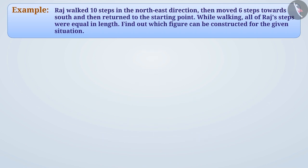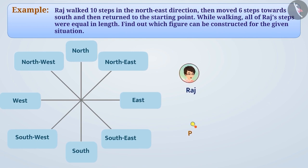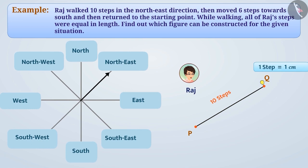So now let's solve our question with the understanding of directions. We will mark the location of Raj with the point P. Raj walked 10 steps towards the northeast direction. Suppose 1 step is equal to 1 cm. We will show this by drawing the line segment PQ in the northeast direction. Then Raj walked 6 steps towards the south, shown by drawing line segment QR towards the south. Raj then returned to the starting point, shown by joining points P and R to obtain line segment PR. We see that we have obtained a triangle.